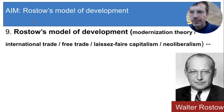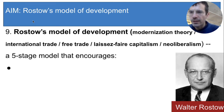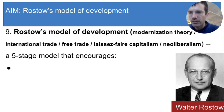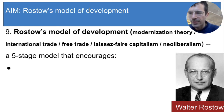Rostow's model is both a set of practices that countries are encouraged to follow and a prediction that if countries follow those practices, they will pass through five distinct stages — so this is a five-stage model. In this video, you're going to learn about the practices that Rostow encouraged countries to follow, and in class you'll look at the five stages that the model predicts. Let's look at what Rostow told less developed countries to do in order to obtain a higher standard of living.